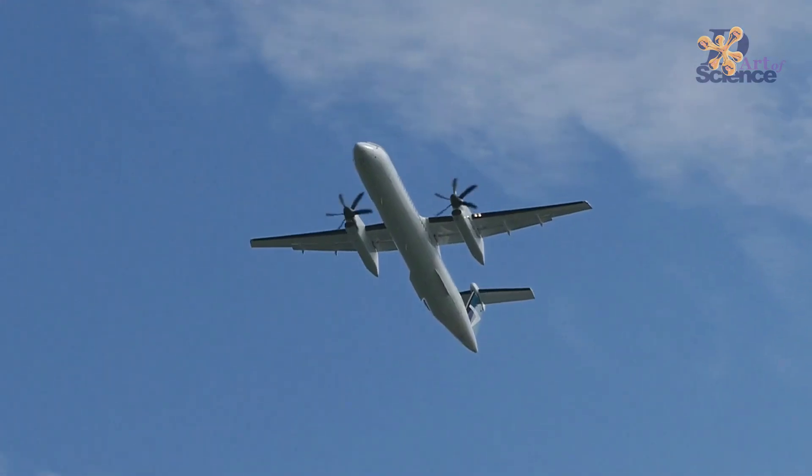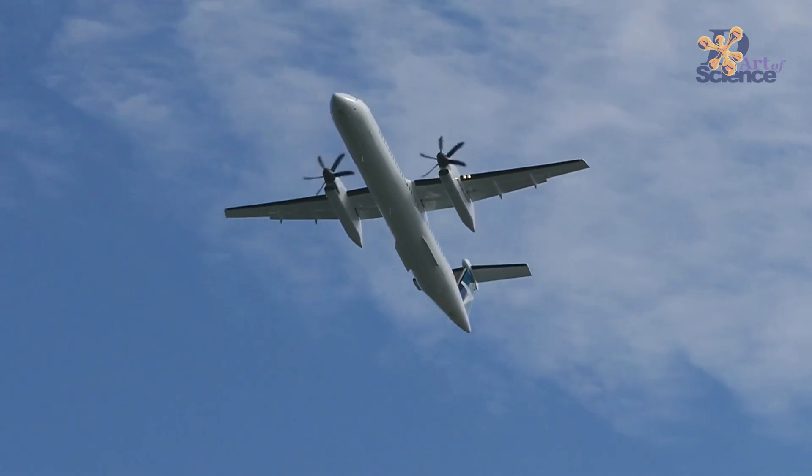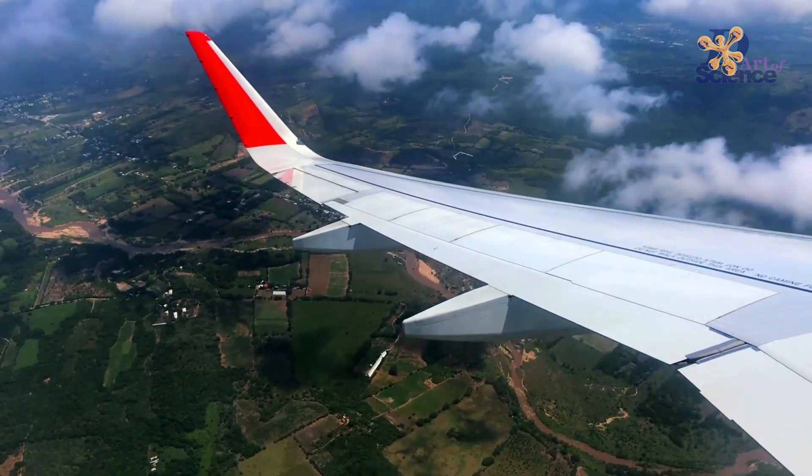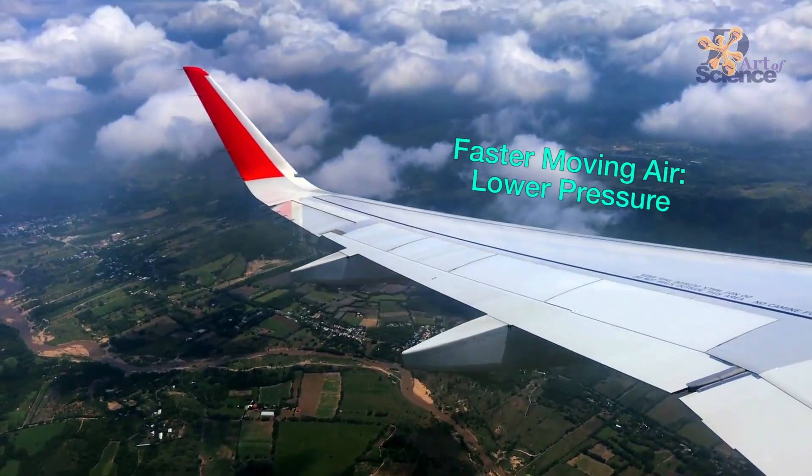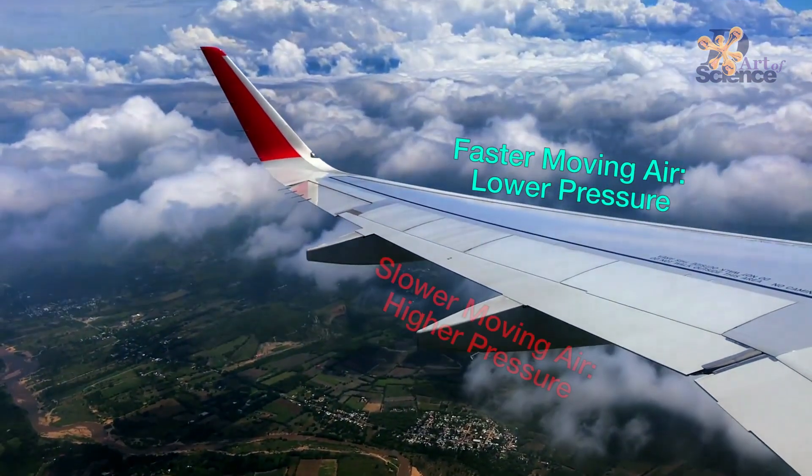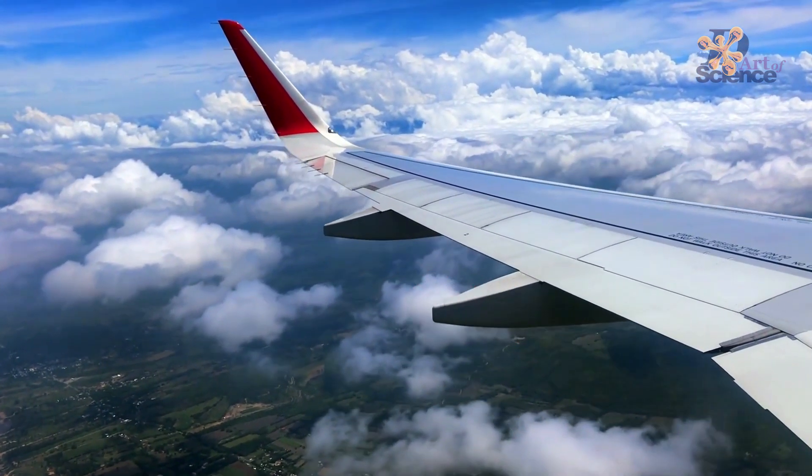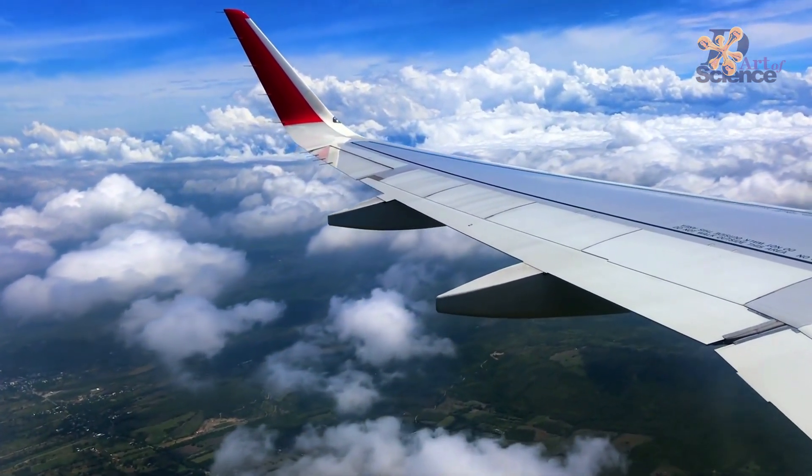In fact, Bernoulli's principle plays a very big role in aeronautics. The wings of an airplane are designed in such a way that air flows faster on the top of the wings and slower underneath the wings. This creates a higher pressure underneath the wing which pushes the airplane upward.